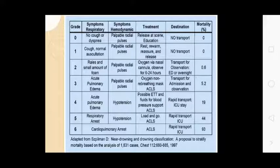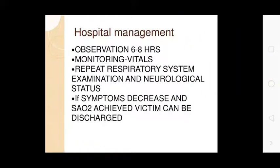Grading of near drowning: Grade 1 through Grade 6, based on severity of respiratory and hemodynamic symptoms. There is a table showing symptom classification, treatment, and destination based on respiratory and hemodynamic status. Hospital management includes observation for 6 to 8 hours, monitoring vitals, repeat respiratory and neurological examination. As symptoms decrease and adequate oxygen saturation is achieved, the victim can be discharged.